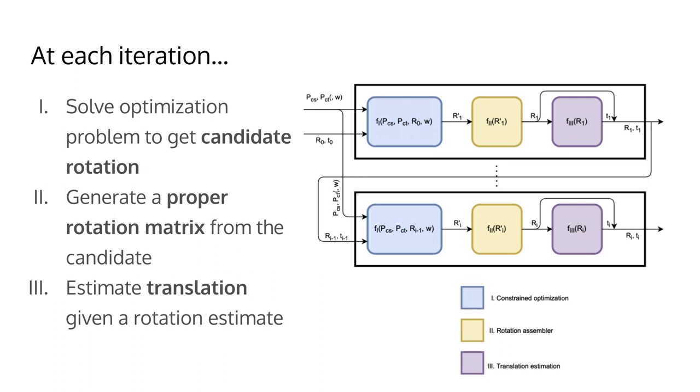The method itself can be split into three stages. In the first stage, we solve an optimization problem that is similar to Kabsch, also minimizing the distance between correspondence pairs, but this time with linearized constraints. This will produce a solution that is not guaranteed to be a rotation matrix.